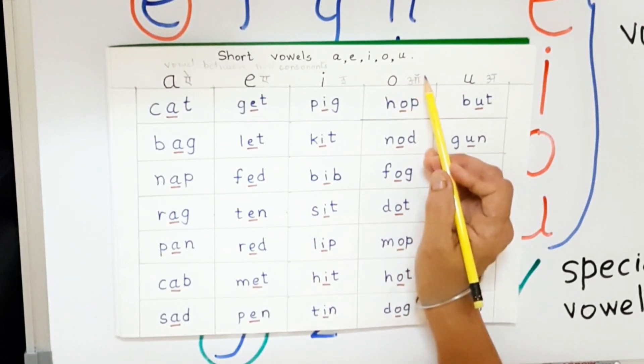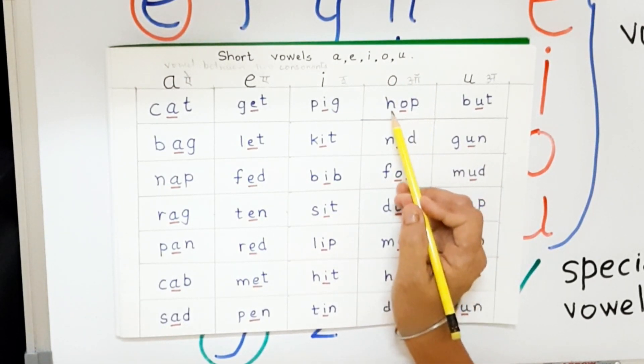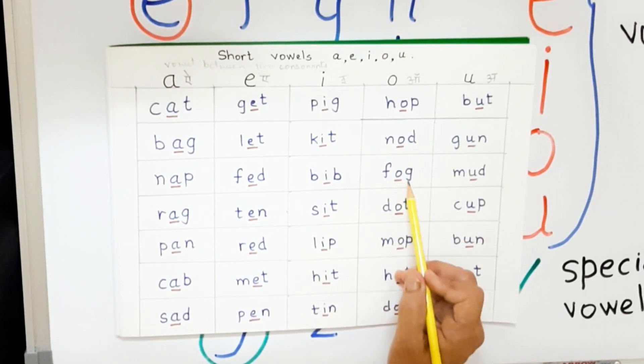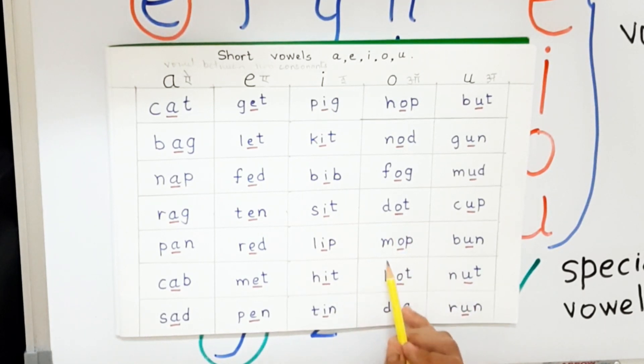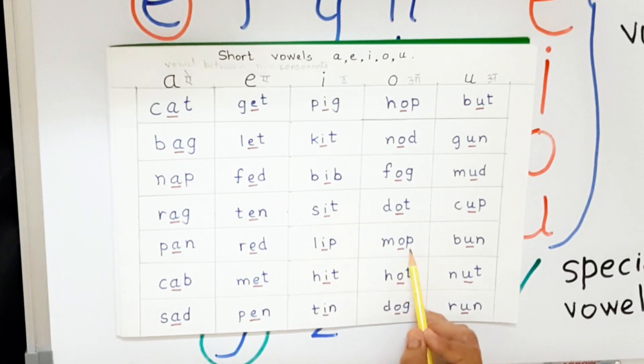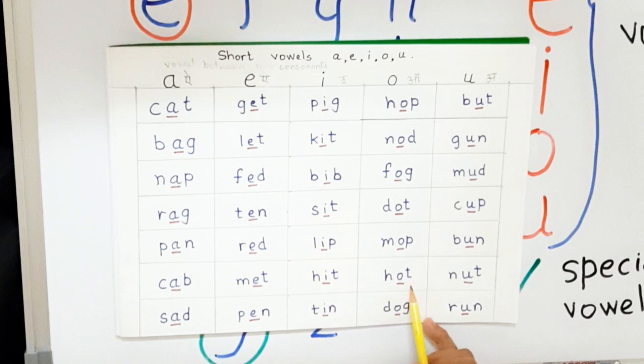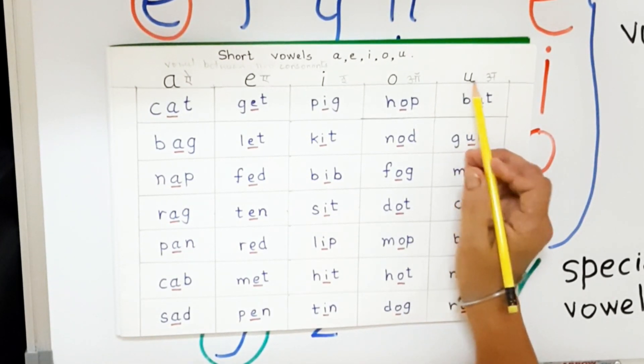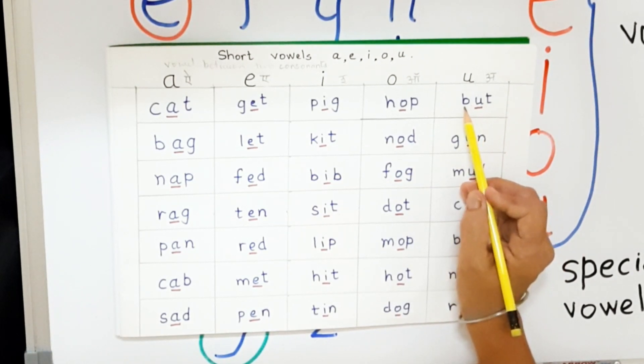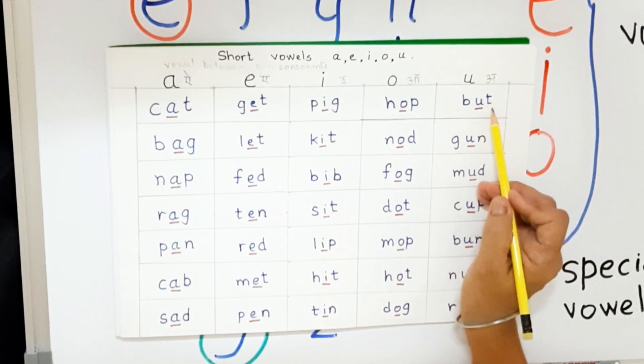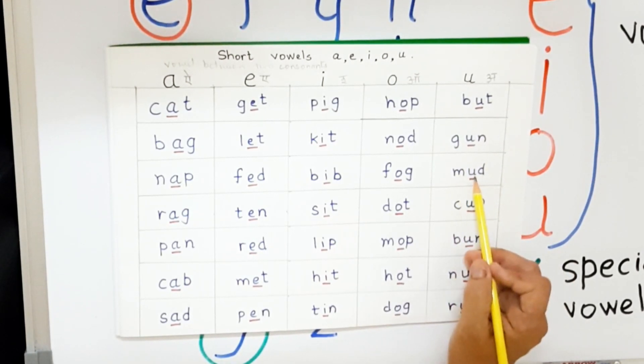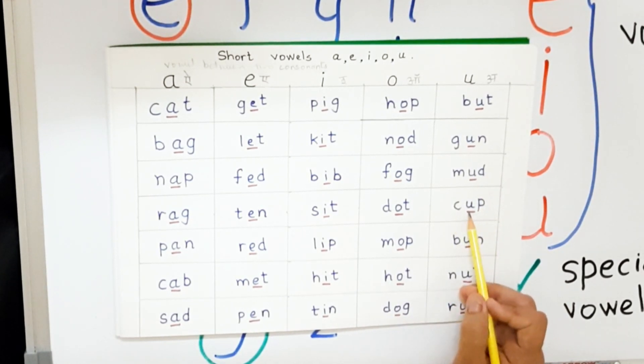Alphabet O makes the sound of O. Hop, nod, fog, dot, mop, hot, job, got, but, god, mom, bun, mud, cup, run, nut, dog.